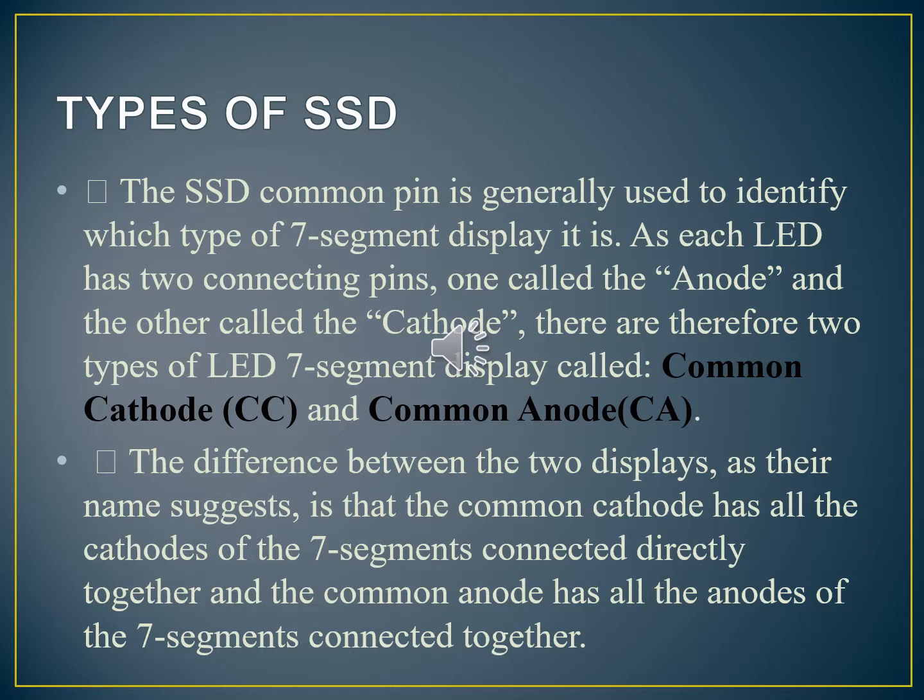Next thing we are going to discuss is types of seven segment displays. As we know that each LED has one anode and one cathode. So based on that we have two types of seven segment LED display. First one is common cathode and second one is common anode. The difference between them we could understand from next slide.